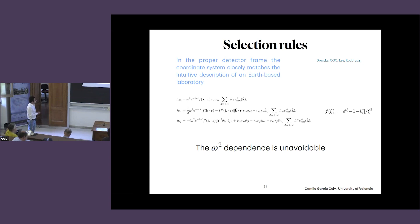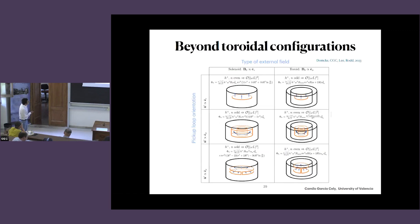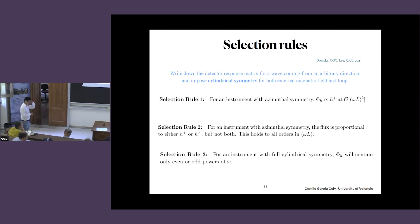An explicit computation in the proper detector frame — which we did for the first time as far as we are aware — shows that the frequency enters the detector frame formula with omega squared. However, in all these experiments most of the time one finds suppressions that go like omega cubed, not omega squared. Not only that, you also find that you detect only one polarization — either H-plus or H-cross, but not both.